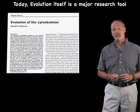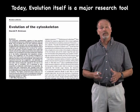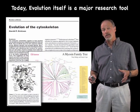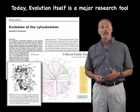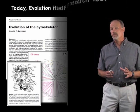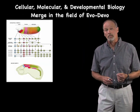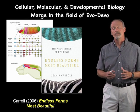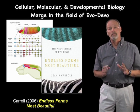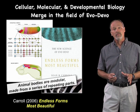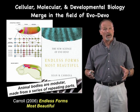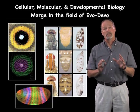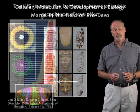Today, evolution itself is a research tool. We use evolution to understand the relationships of proteins in the cytoskeleton, and also to understand the development of body plans in the field of evolutionary developmental biology. If you want to read up on this, pick up Sean Carroll's great book Endless Forms Most Beautiful, which explains the way in which the animal body is modular — made up of repeating parts that produce the forms and patterns we look at and appreciate as biologists.